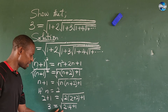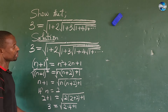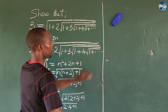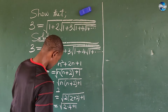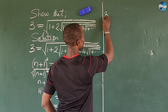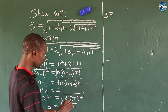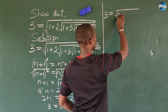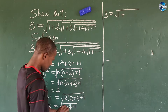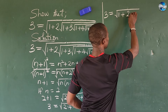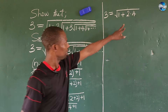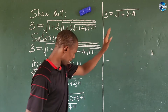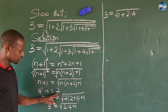Now I can rearrange this side of the equation. If I rearrange this, continuing on this side, this will give us 3 equals the square root of 1 plus 2 times 4. The dot here means multiplication. So let's keep this result for n equal to 2.